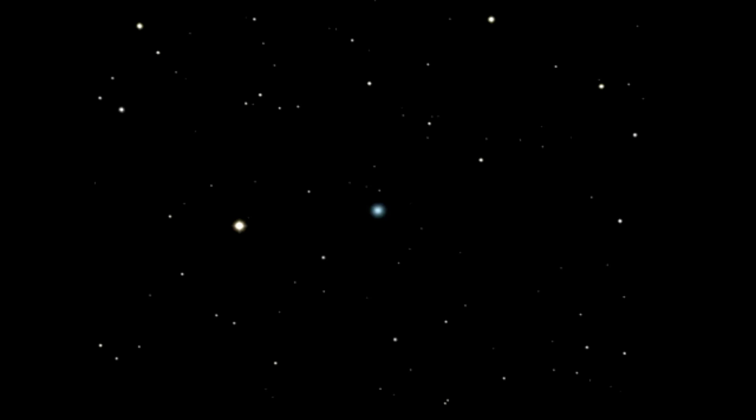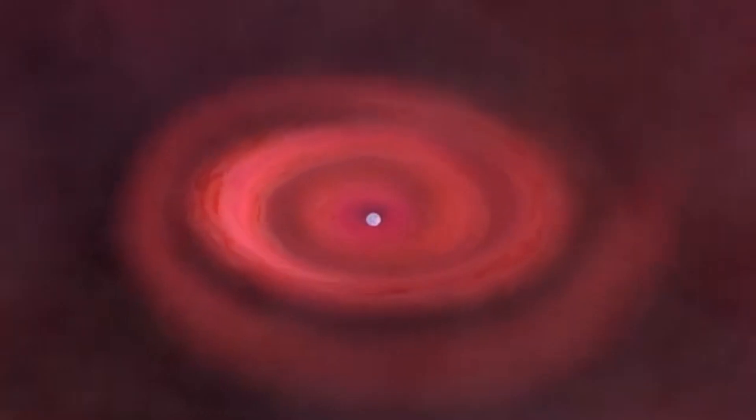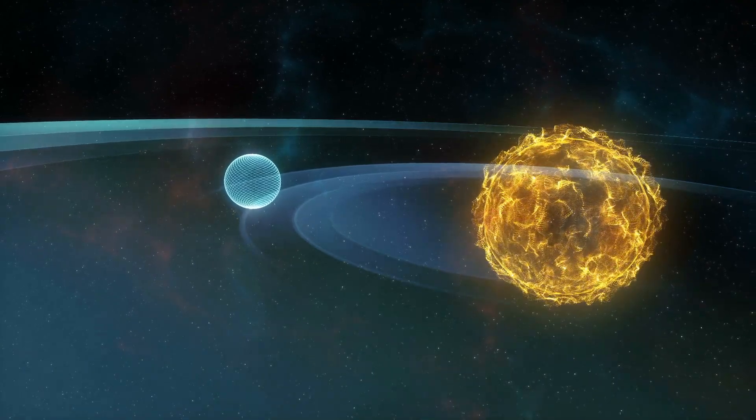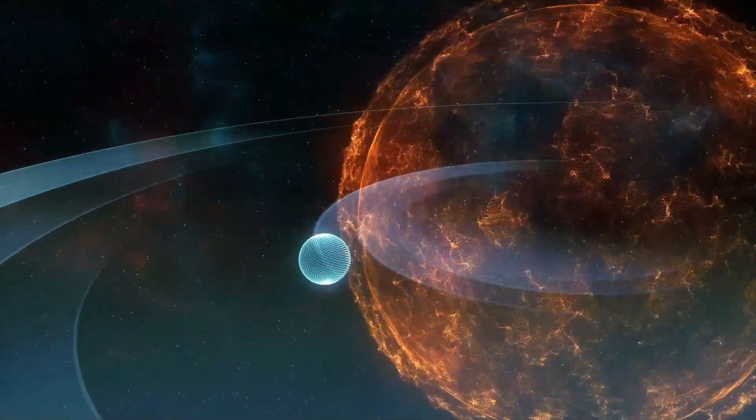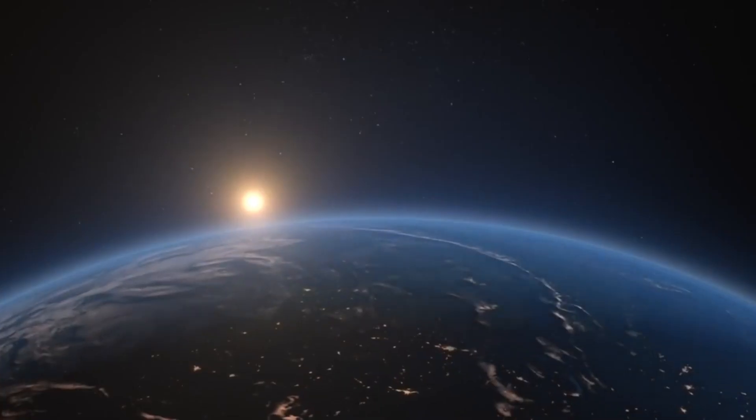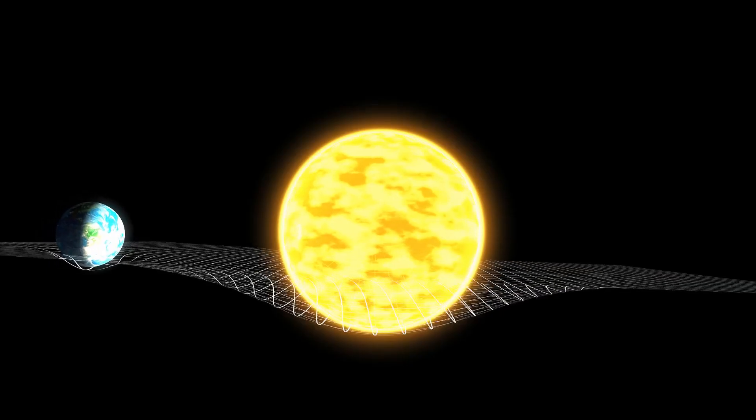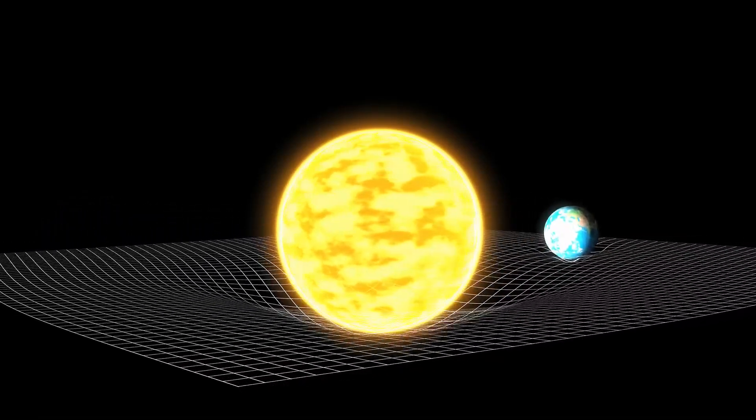Supernovas are massive, violent explosions that can transform the very nature of elements, scattering them into the universe to be absorbed by new planets, stars, and even life itself. If such an event were to occur in our cosmic vicinity, Earth would likely be affected. Some scientists propose that if our Sun were to explode as a supernova, the ensuing shockwave would not necessarily vaporize the entire planet, but rather cause significant thermal effects, potentially leading to the evaporation of the side facing the Sun. Predictions suggest that the planet's overall temperature could soar to approximately 15 times hotter than the typical surface temperature of our Sun.